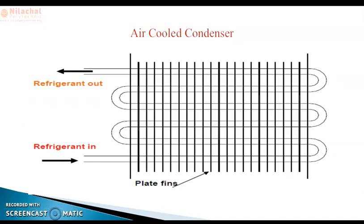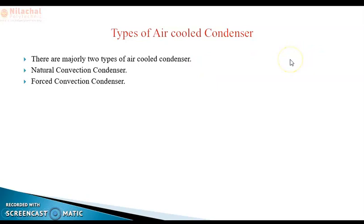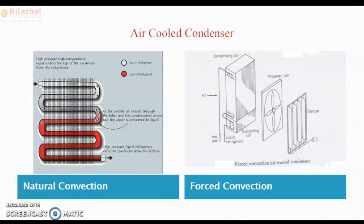There are two types of air-cooled condenser: the natural convection condenser and the forced convection condenser. You can observe both types — this is the natural convection type and this is the forced convection type.